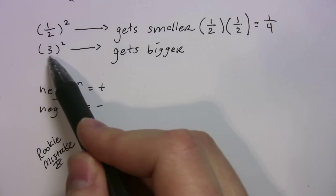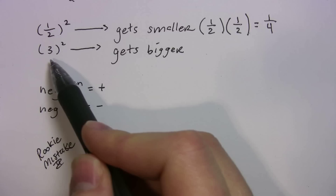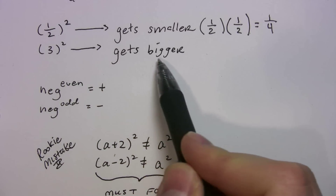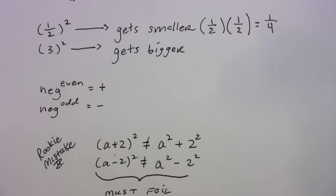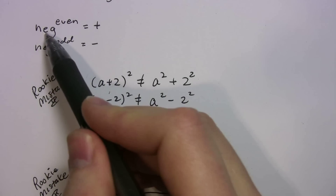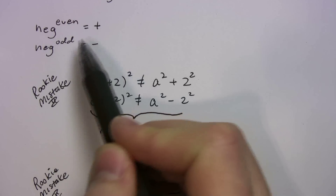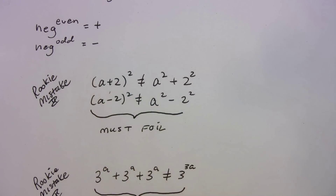The opposite is true when you have an integer, and this should make sense. Three squared gives you nine; four squared gives you sixteen — all those numbers get bigger. Now there's a situation where that's not always true, and that's with negative numbers. When you have a negative number to an even power, it gives you a positive number back. When you have a negative number to an odd power, it gives you a negative number back.